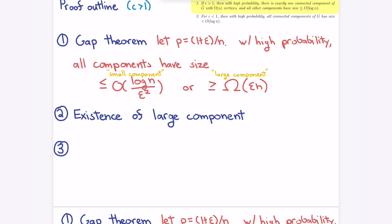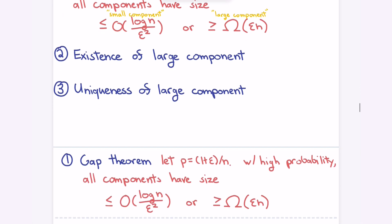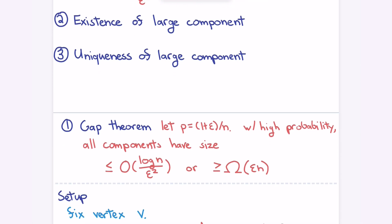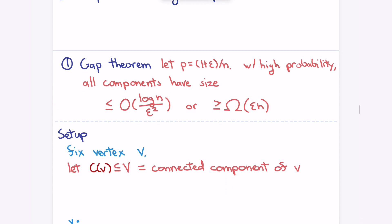So first we show there are no medium components. Then we'll show there's at least one really big component. And the last step is to show there's at most one really big component — the uniqueness of the giant component. Put it all together, and you get exactly one giant component. We'll spend most of our time on part one; part three is actually the fastest.